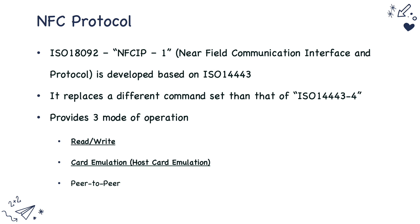For NFC, a new protocol called ISO 18092 — also referred to as NFC IP-1 (Near-Field Communication Interface and Protocol version 1) — was developed on the same lines as ISO 14443. It replaced the main command set used in ISO 14443 with a newer command set and enhanced the modes of operation. Previously, contactless cards were used only for reading and writing data, or acting as a contactless card (card emulation).